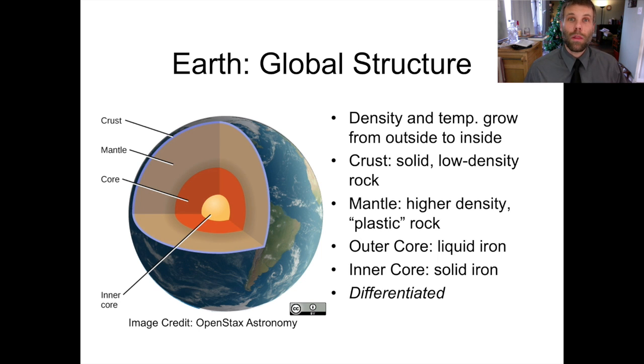And then beneath the mantle, there are two different parts of the Earth's core. The Earth's core is made up of dense metallic material, primarily iron. The outer core is liquid iron, but the inner core, despite being hotter, is actually solid. And that's because of the tremendous pressure that the inner core is under due to the weight of everything up above it, pressing down on top of it.